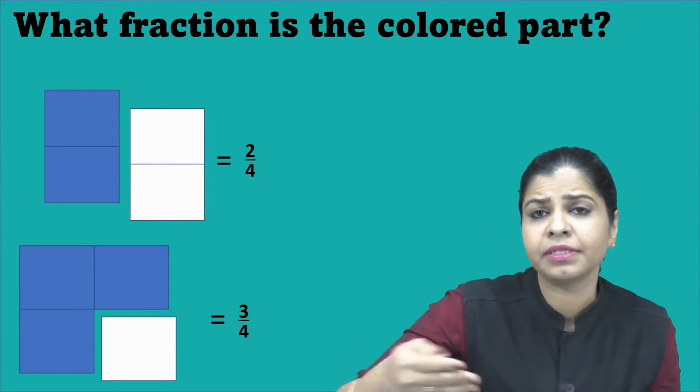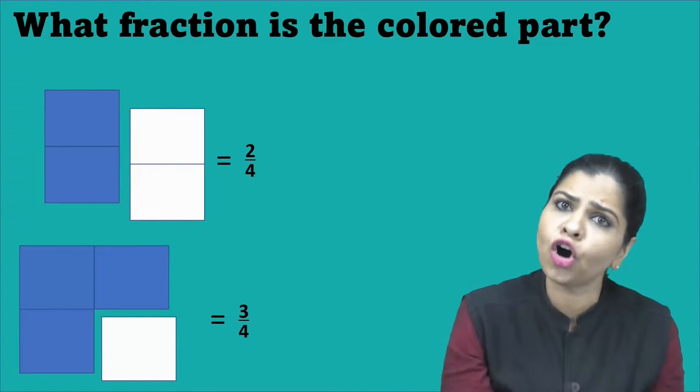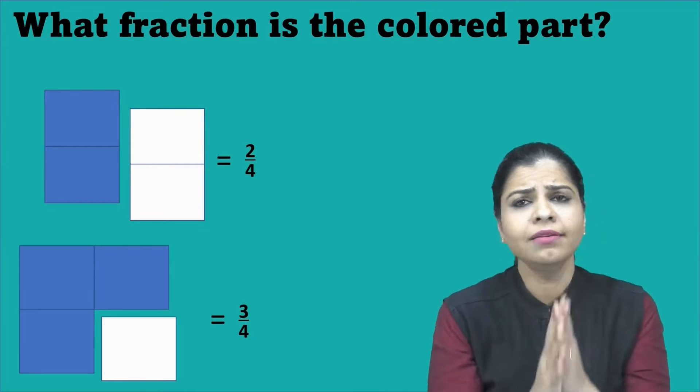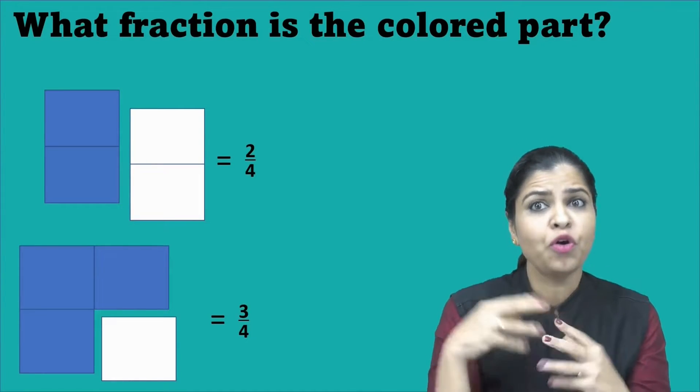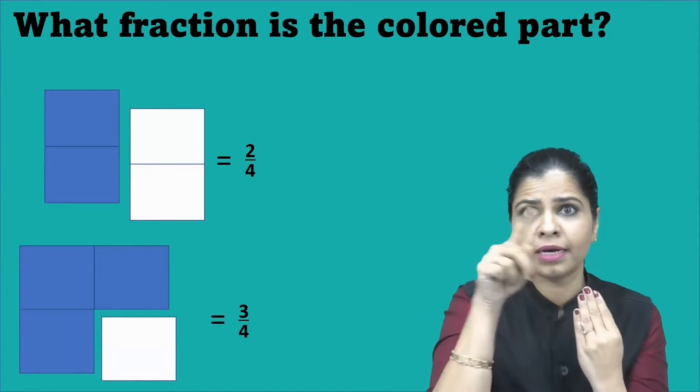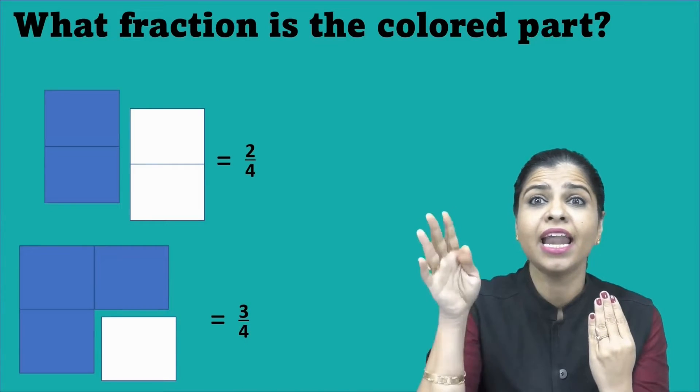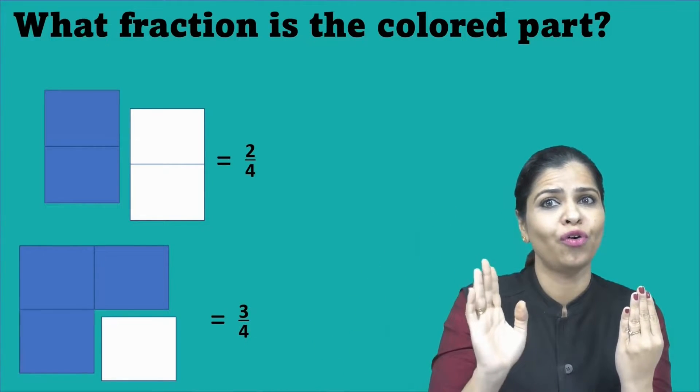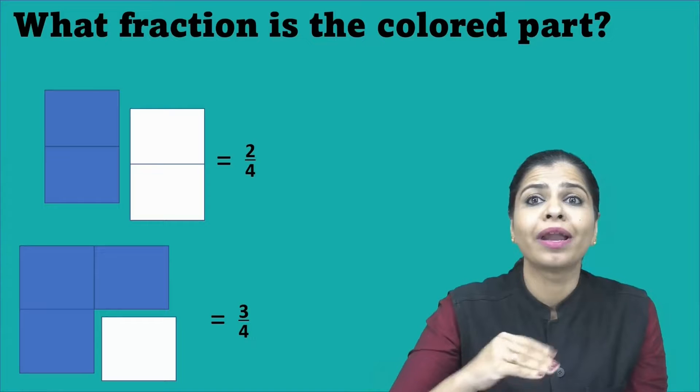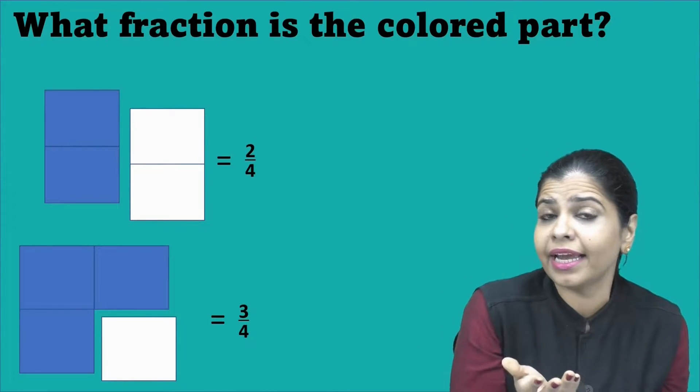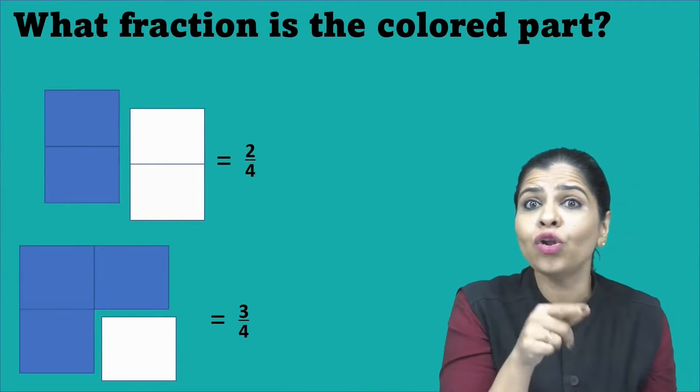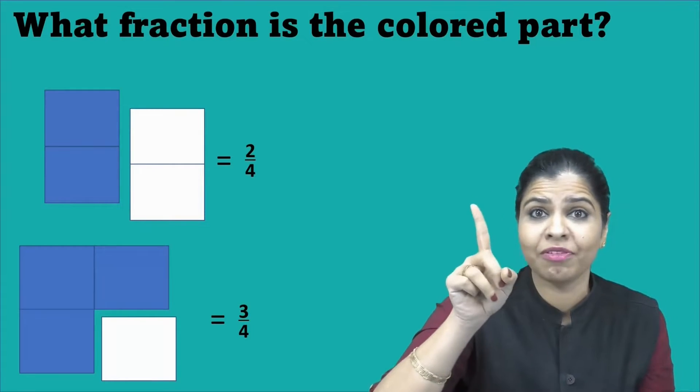So if I had taken this further, a step ahead and colored all four pieces, then how would you denote it as? Four. I have four smaller rectangles and I've shaded how many? Four. So four by four. And what does that four by four indicate? It indicates a whole, that is one when simplified.